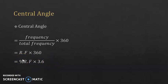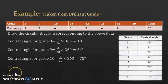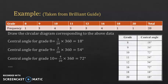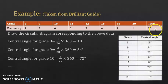Now let's do an application. This example is also taken from the Brilliant Guide using the same data — draw the circular diagram corresponding to the above data. The first thing when constructing the pie chart is to find the central angle for each value. Apply the first rule since you have the frequency: for grade 8, it's 1/20 × 360 = 18 degrees; for grade 9, it's 3/20 × 360 = 54 degrees. Do the same for all other grades — you should get these values. Now we know the central angle of each value and can construct the circle.